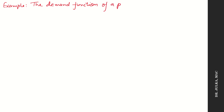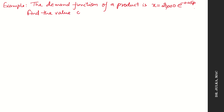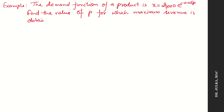Example 1. The demand function of a product is x equals to 20,000 into e raised to the power minus 0.05p. Find the value of p for which maximum revenue is obtained. When we talk about revenue, revenue is always price per unit into quantity sold. So capital R equals to small p into x.